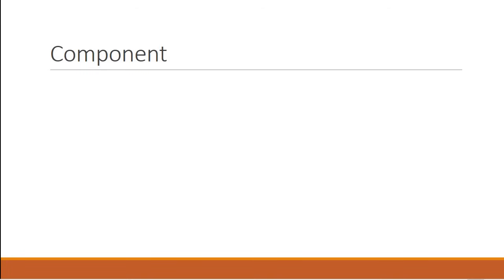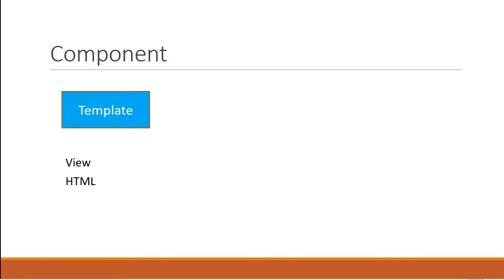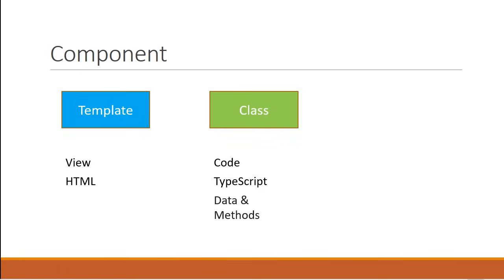A component is made up of three parts. The first one is a template which represents the view. This is created using HTML and will be the user interface for your application. Next we have a class which is nothing but code that supports the view, and this is created using TypeScript. The class, like any other programming language, contains data properties and methods that can be used to control the logic of the view.